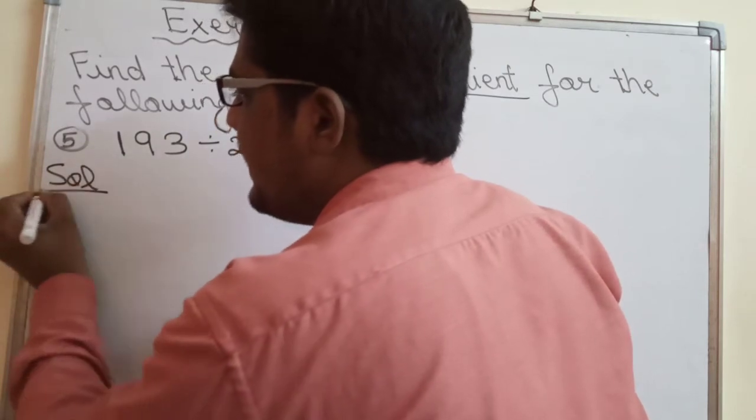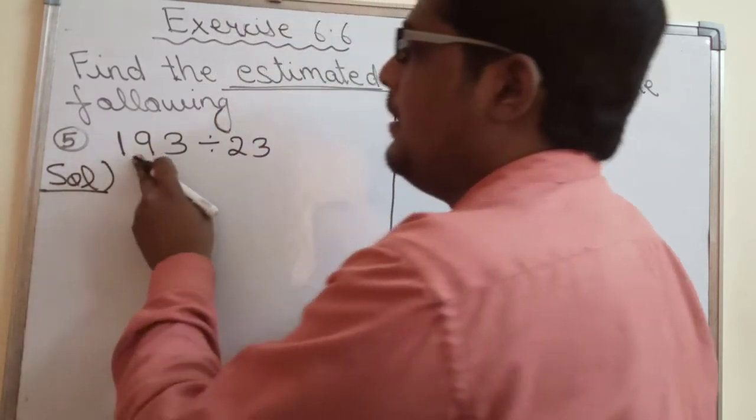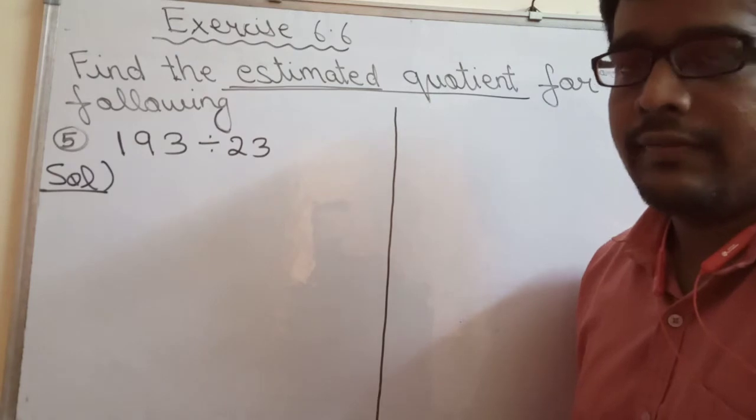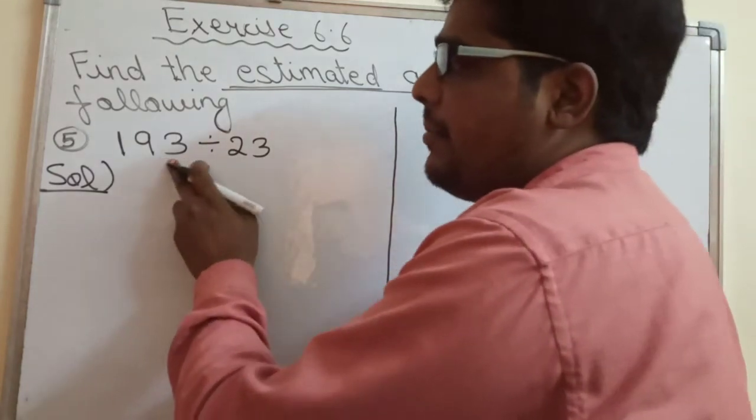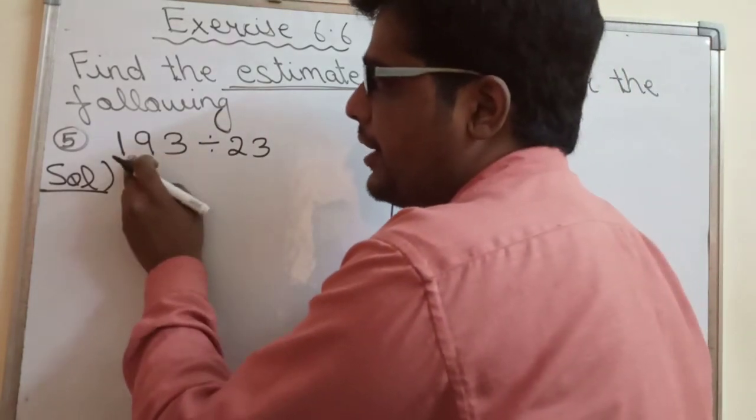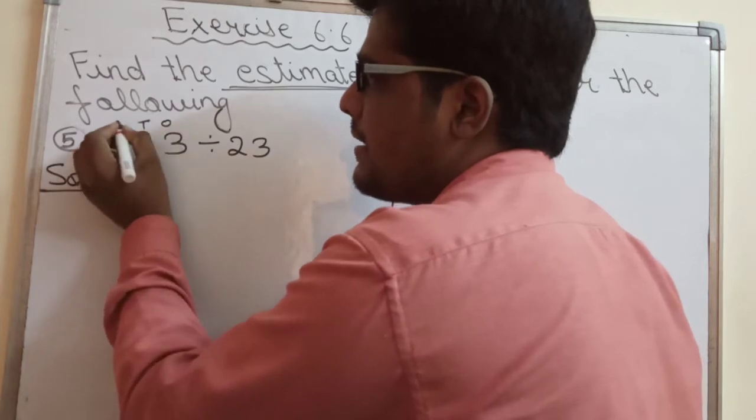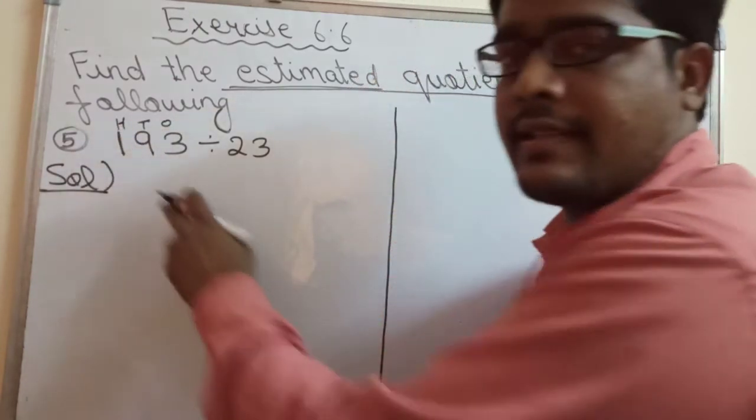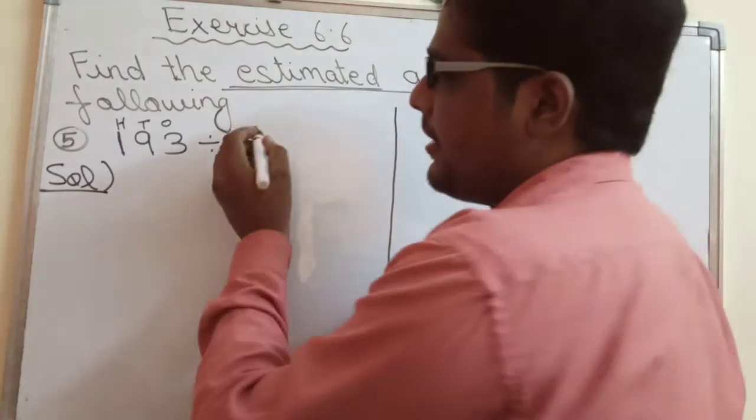First, sab se pehale to hum dividend or divisor ko round off karegay. Dividend may three digits have - one, two, three - ones, tens and hundreds, so hum is ko nearest hundred round off karegay.